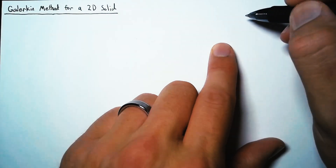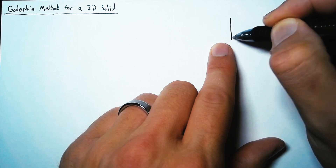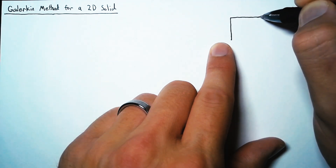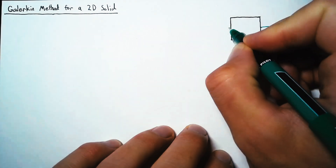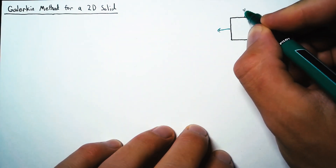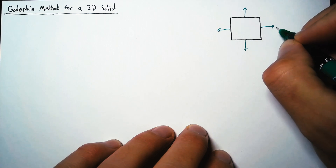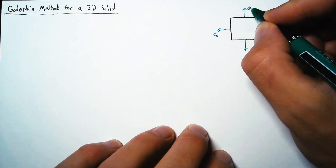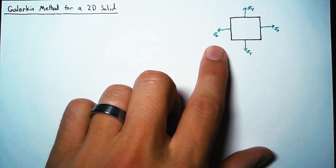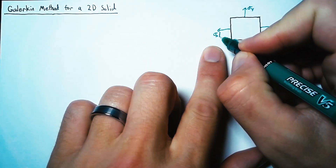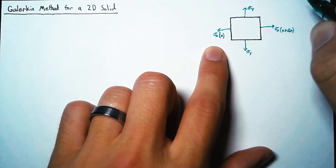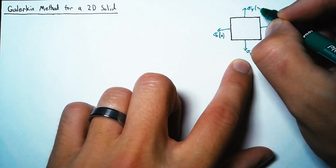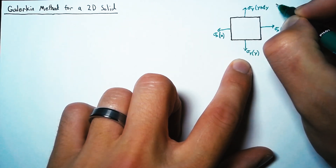Our starting point is to determine the differential equation. In order to do that, we need to look at a differential element, which has a width delta x and a height delta y. We're interested in the stresses on this element, so we're going to look at our normal stresses in the x and y direction, which are sigma x and sigma y. We're going to evaluate these at positions x and x plus delta x for sigma x, and at y and y plus delta y for sigma y.